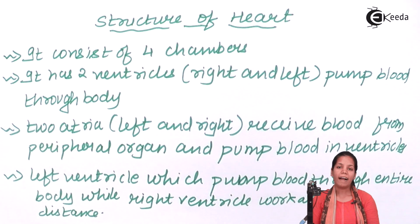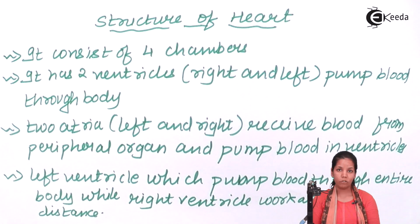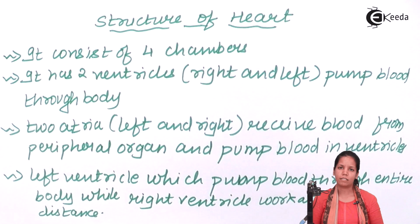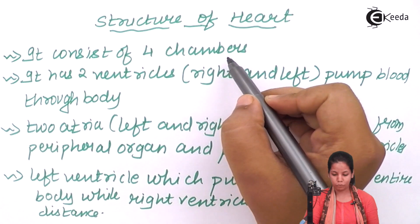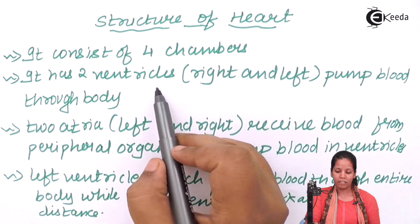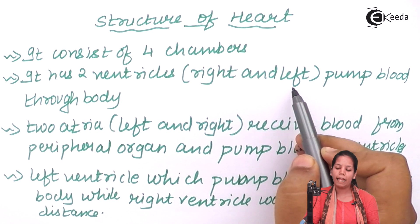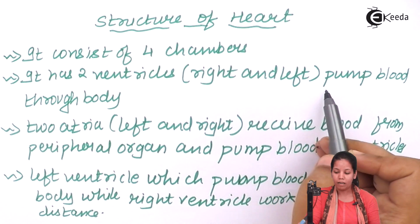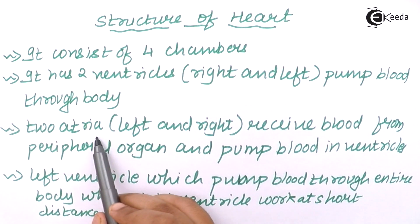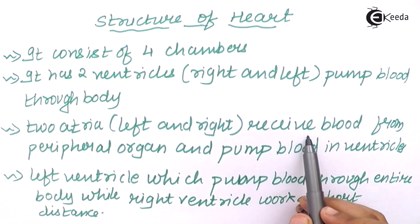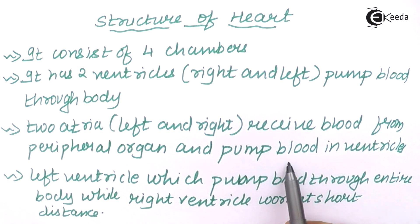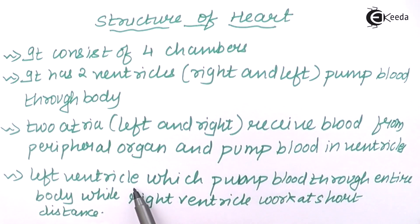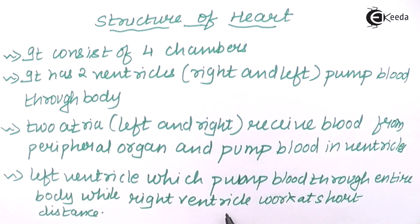If you closely observe the heart, it is made up of four different chambers — basically two ventricles and two atria. The right ventricle and the left ventricle pump blood throughout the body. The left atrium and the right atrium receive blood from peripheral organs and give it back to the ventricles. The left ventricle pumps blood through the entire body, whereas the right ventricle works at short distances pumping blood.